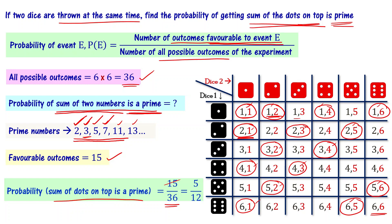Simplifying 15/36: since 15 = 3 × 5 and 36 = 3 × 12, we get 5/12. So 5/12 is the answer. Understood?